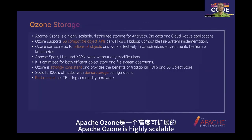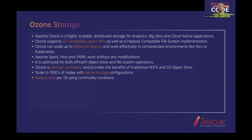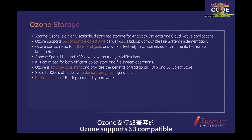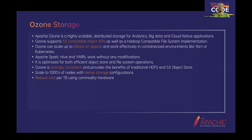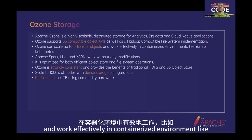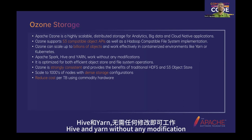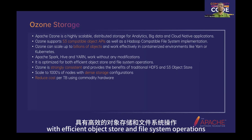Apache Ozone is a highly scalable distributed storage for analytics, big data, and cloud-native applications. Ozone is developed to manage the scalability issues of HDFS and is developed by the Hadoop community. Ozone supports S3-compatible object APIs as well as Hadoop-compatible file systems. It can scale up to billions of objects and works effectively in containerized environments like YARN or Kubernetes. Ozone also supports Spark, Hive, and YARN without any modification, and is optimized with efficient object store and file system operations.